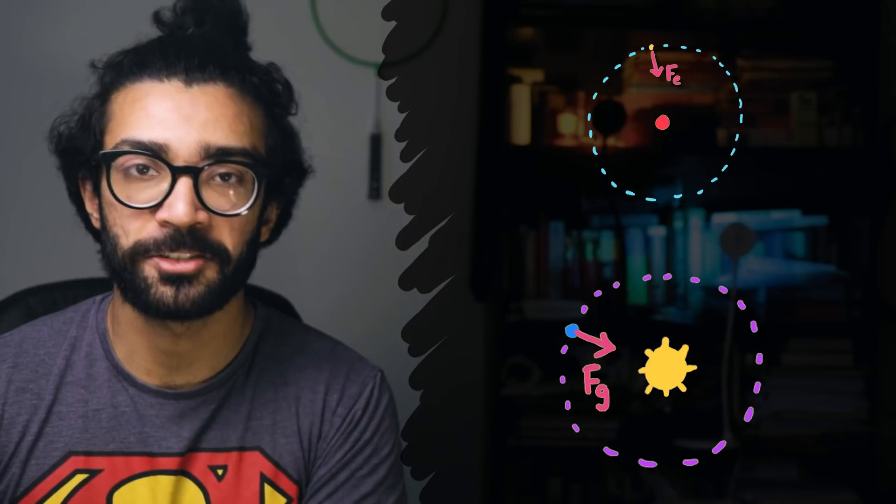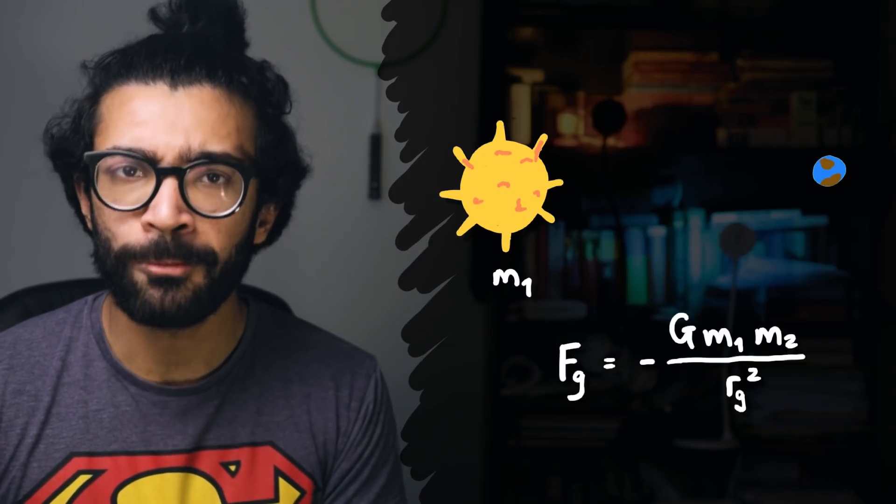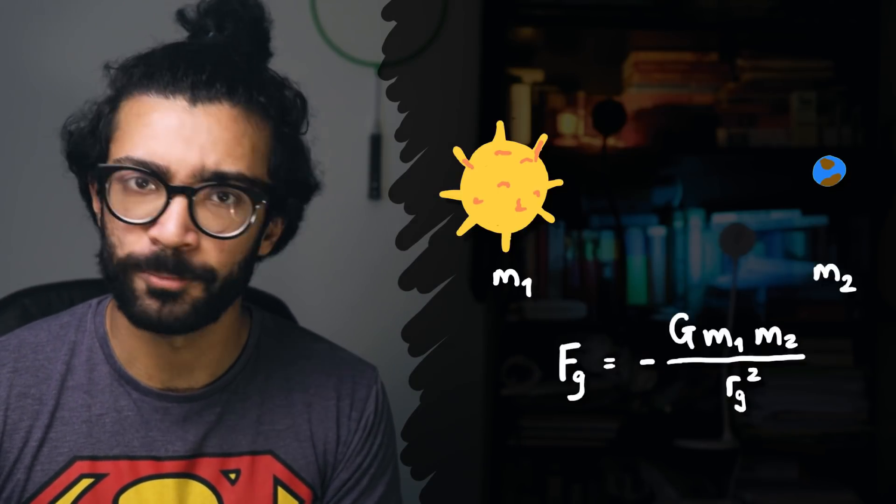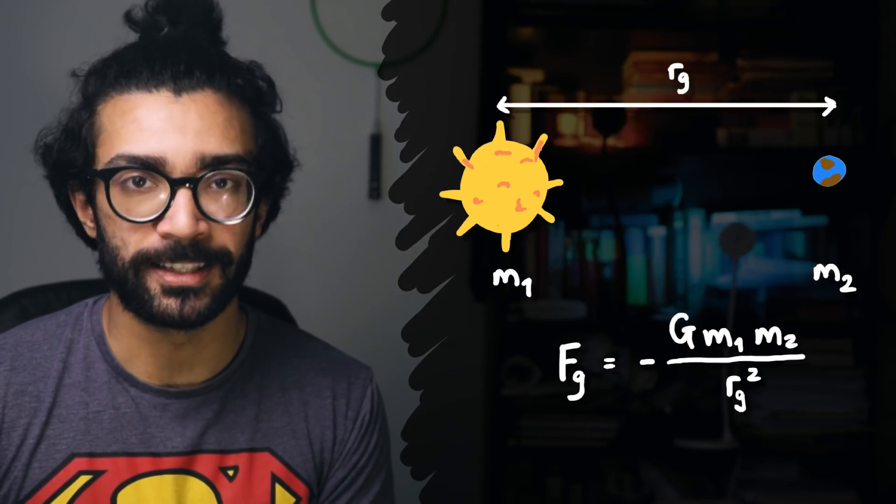Here's what I mean by this. The classical gravitational force of attraction between two massive bodies, let's say the sun and the earth, is given by this expression here, where m1 is the mass of the sun, m2 is the mass of the earth, and rg is the distance between the sun and the earth.